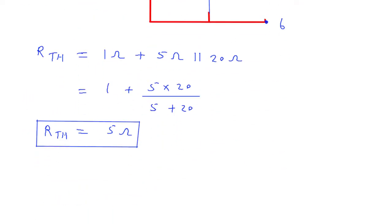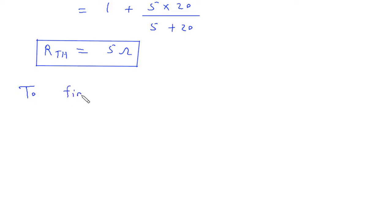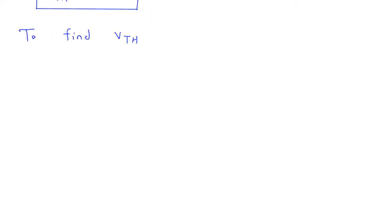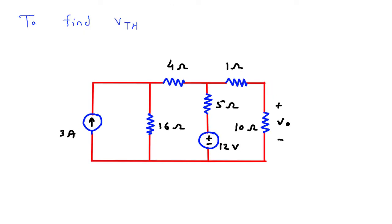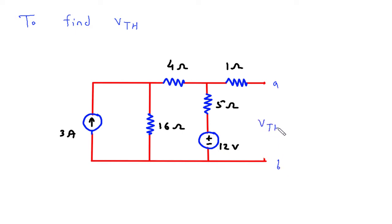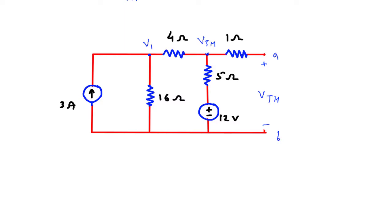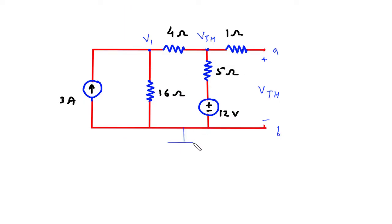Next, we have to find VTH. To find VTH, we will consider this circuit. This is terminal A and this is terminal B, and this is VTH — positive at A and negative at B. This will be node V1, and let's say this is the ground node with zero voltage. The currents are I1, I2, and I3.